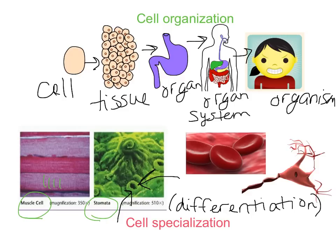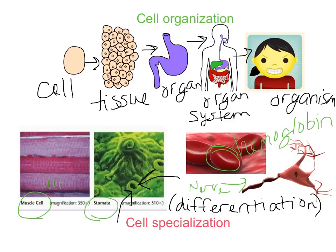Over here we have hemoglobin — some of you may know that hemoglobin transfers oxygen in your body. These cells are built to attach oxygen and fit through your capillaries. And over here we have a nerve cell, made to do electrical message conduction to send messages throughout your body. These are all different kinds of cells that have specialized in a multicellular organism — you have to have cells specialized to be able to do different jobs.